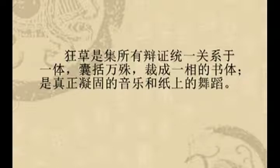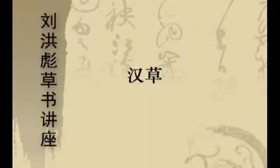可是你看这个草书作品，应该是我看到他草书作品里面比较豪放的一种，那种线条的摇摆、行列的正斜、字的大小的对比、疏密关系等等都有别于他以往常态下的那种作品。狂草集所有辩证统一关系于一体，能够囊括万书，是真正的凝固的音乐和纸上的舞蹈，所以狂草确实进入到了一个前所未有的繁荣期。